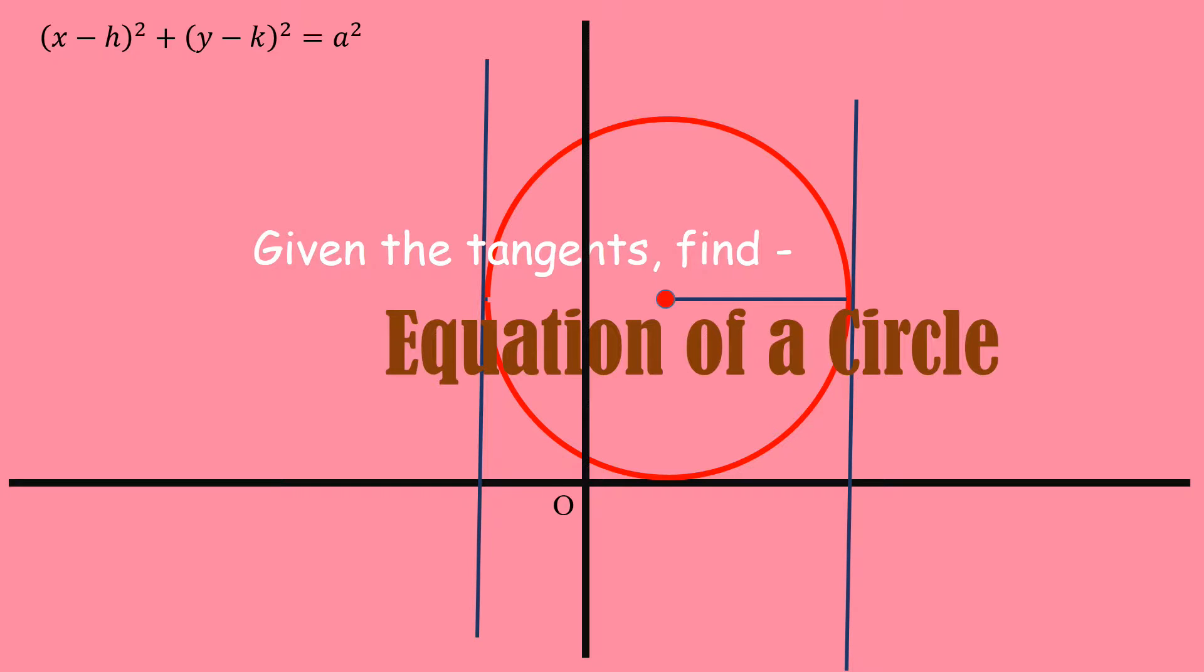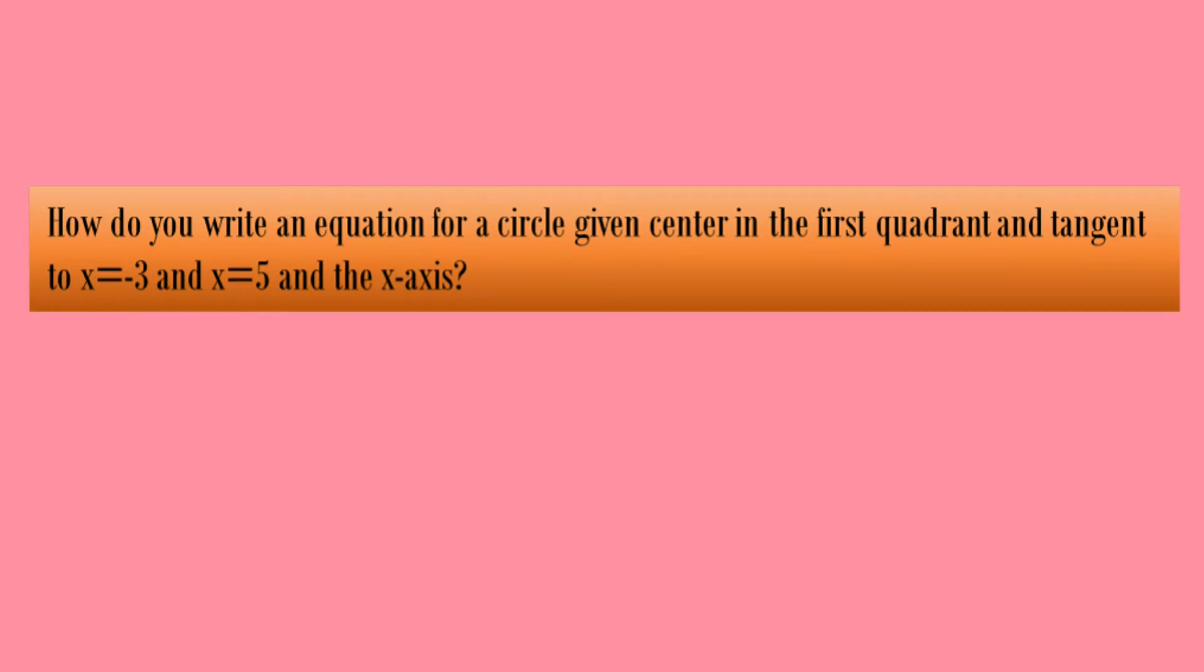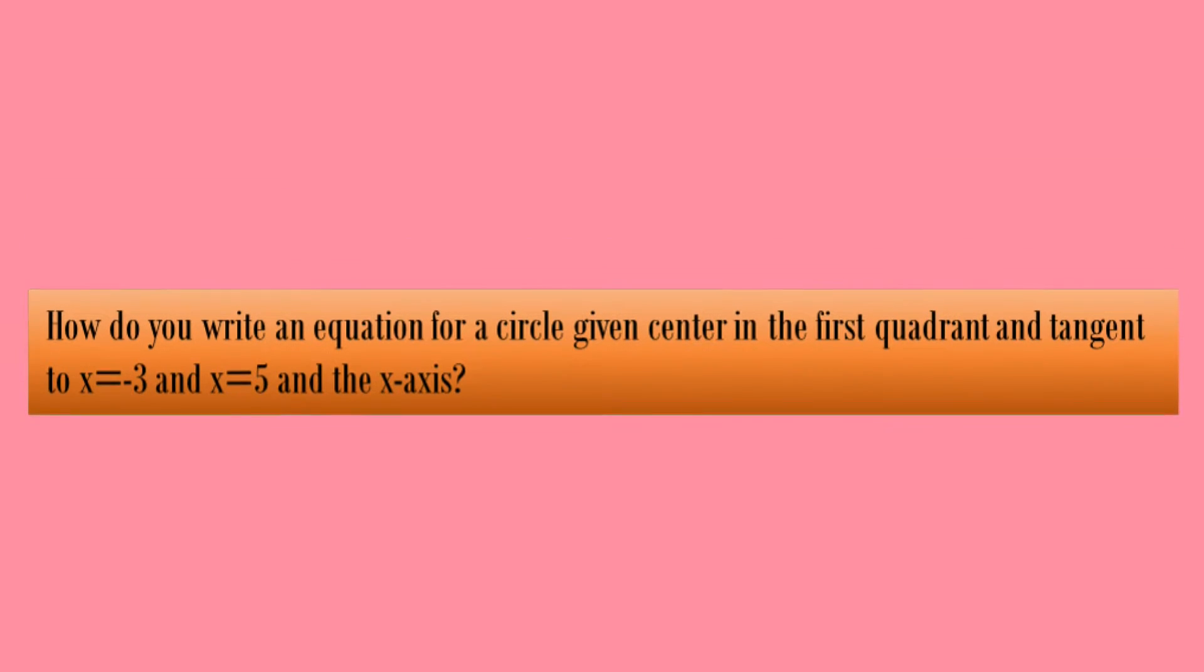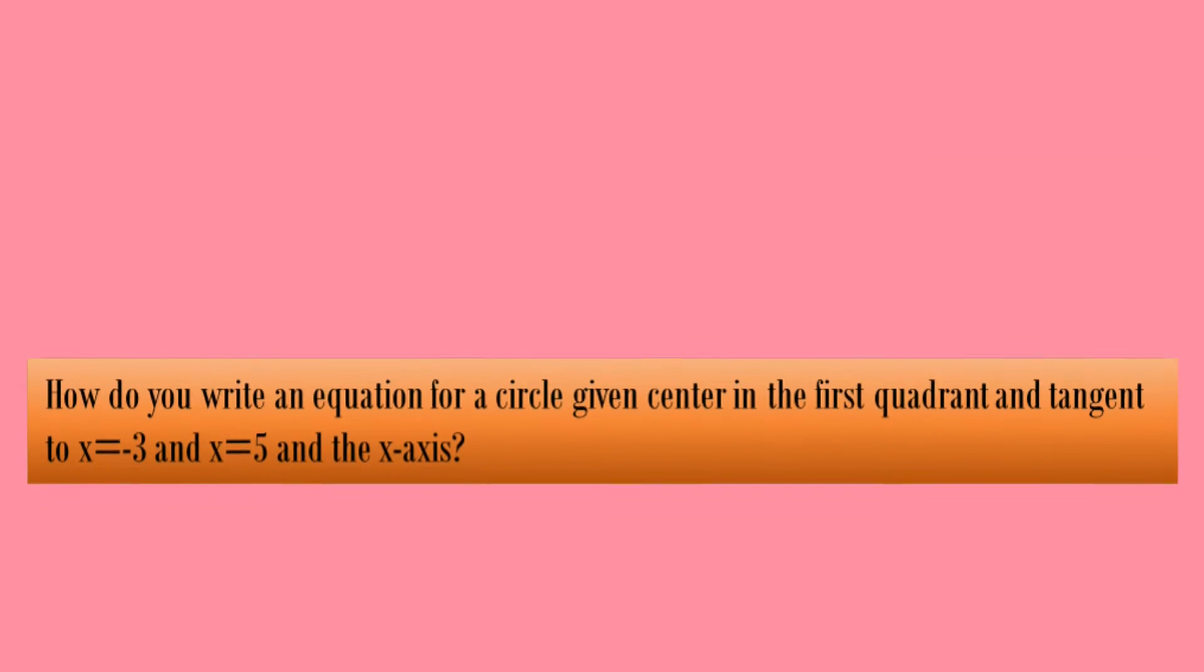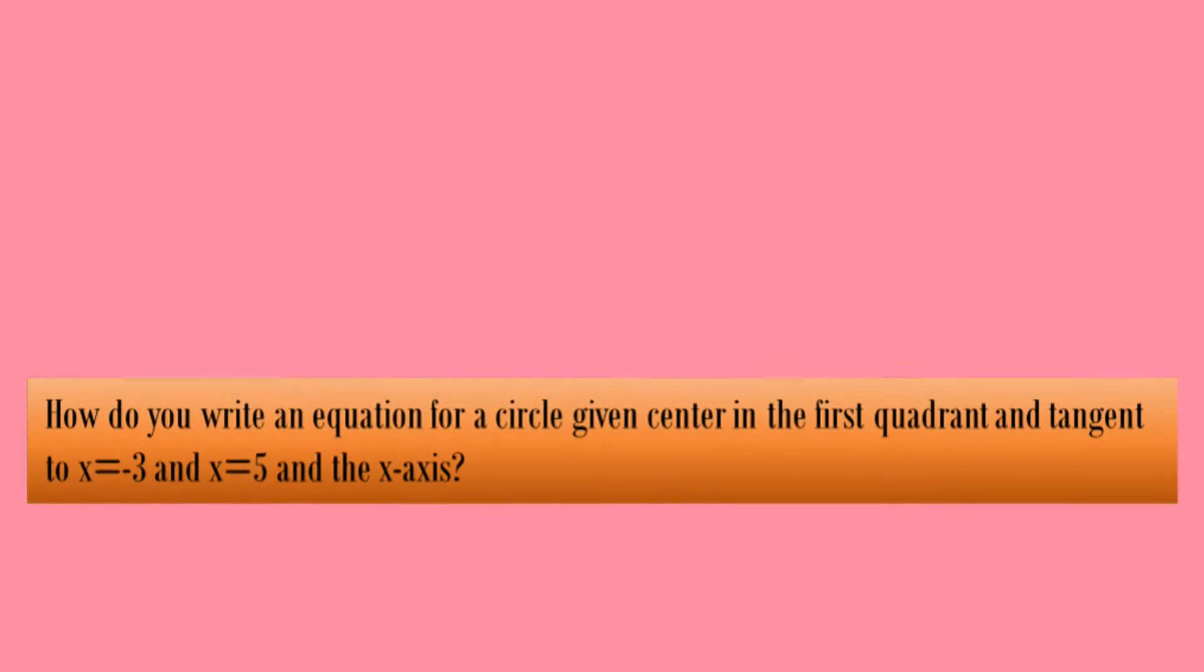This is the problem. How do you write an equation for a circle given center in the first quadrant and tangent to x=-3 and x=5 and the x-axis?